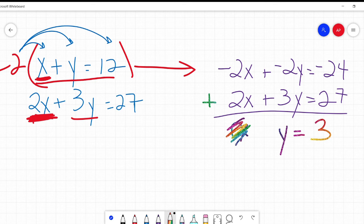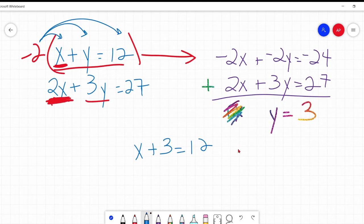Things are going to cancel out. If I add this together, negative 2x plus 2x is 0x so that's just gone. Negative 2y plus 3y is positive y and negative 24 plus 27 is a positive 3. So y equals 3. And now I can go back up to my equation up there that says x plus y equals 12. I know what y is now, y is 3, and then that's a very straightforward algebra problem. I can subtract 3 from both sides, x equals 9.